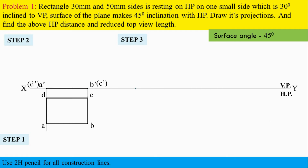In almost all questions, step three is the surface inclination step. Whatever angle is related to surface inclination in the given must be drawn in step three, and our inclination angle is 45 degrees.